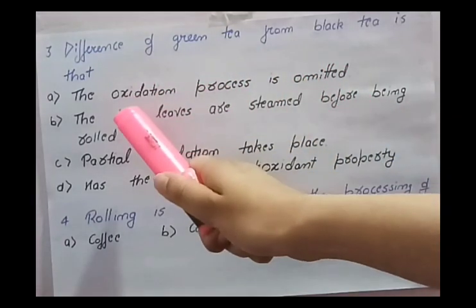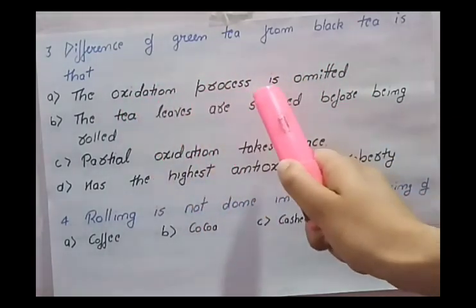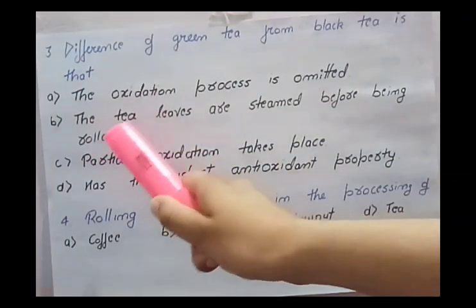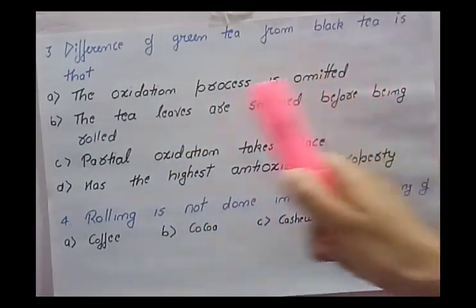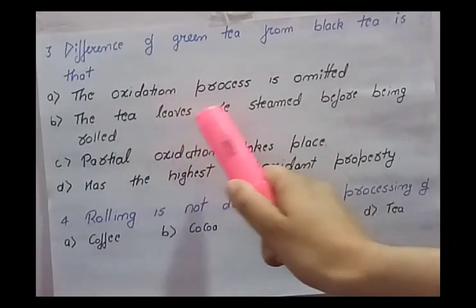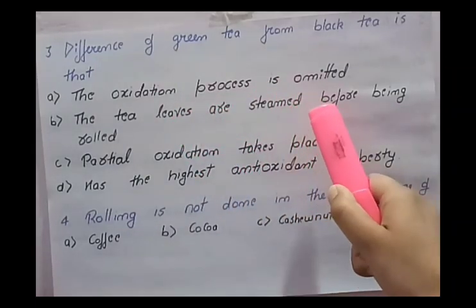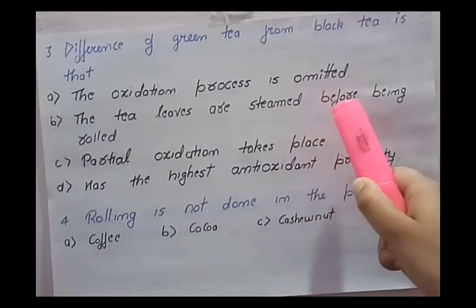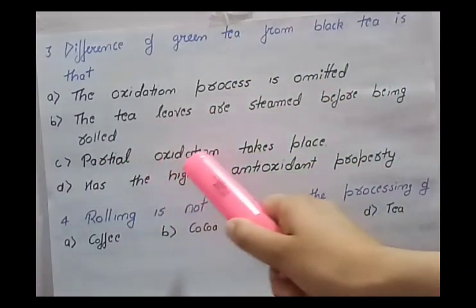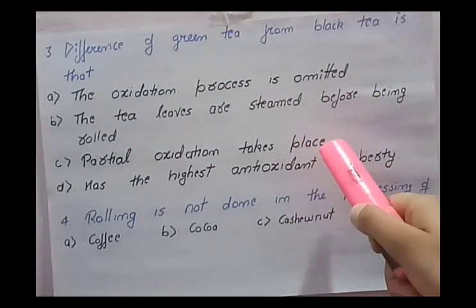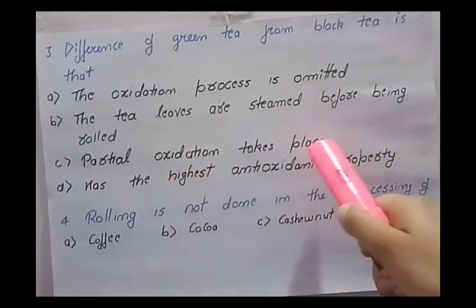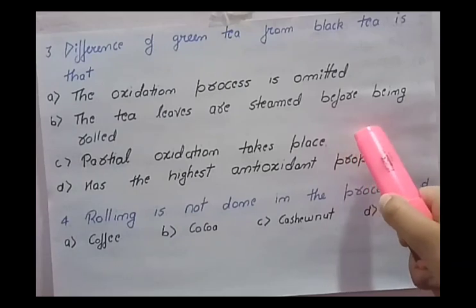Second option — the tea leaves are steamed before being rolled — yes, during green tea processing the tea leaves are steamed so that the enzyme polyphenol oxidase is inactivated. Third option — partial oxidation takes place — no, in green tea there is no partial oxidation. Partial oxidation takes place in oolong tea processing.